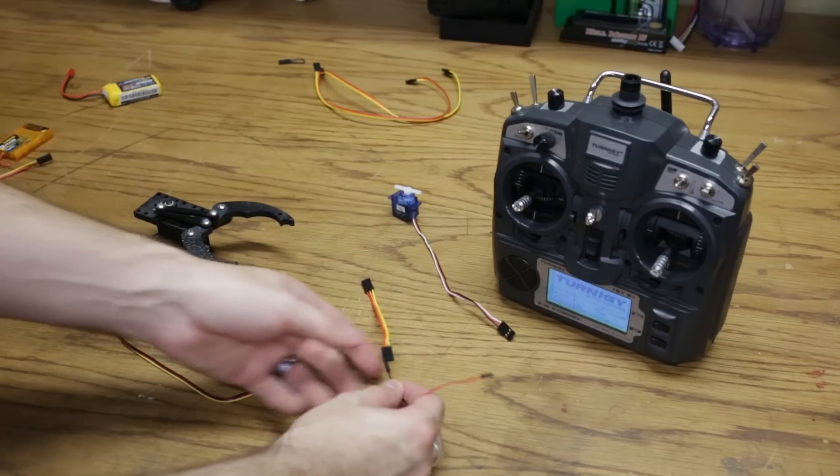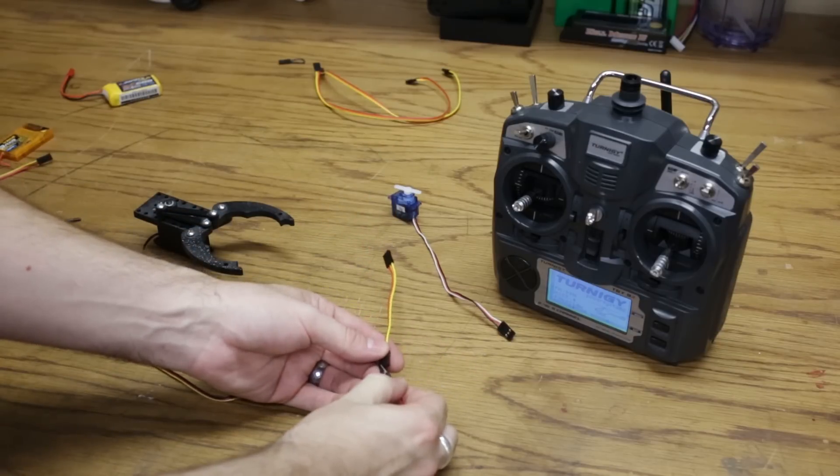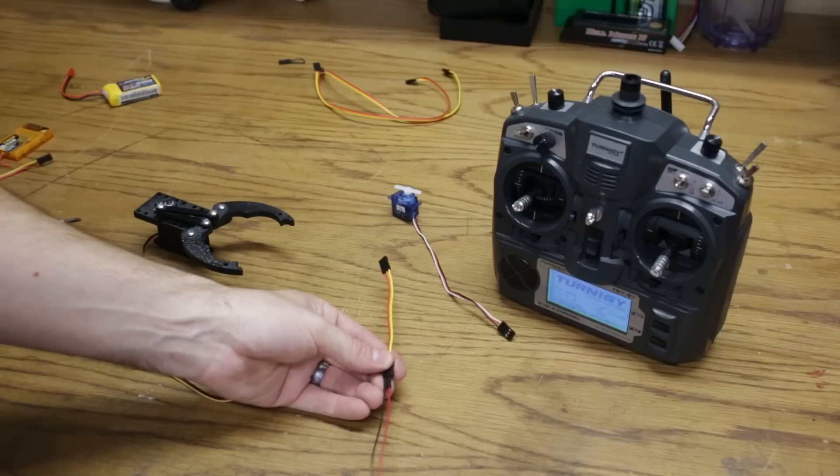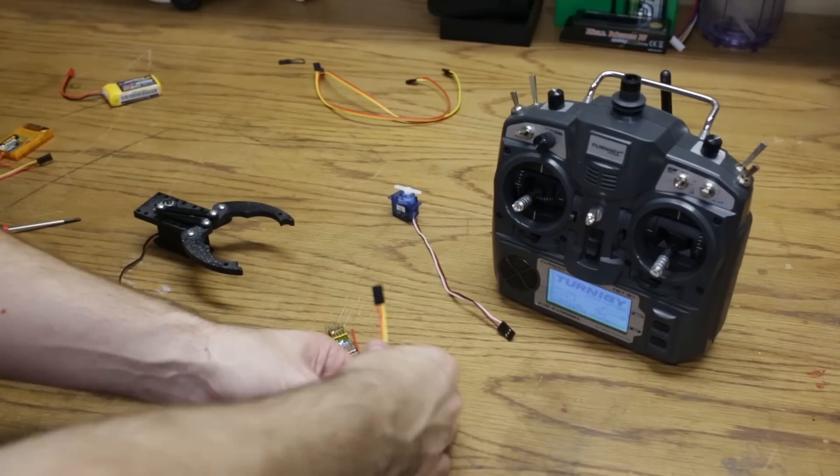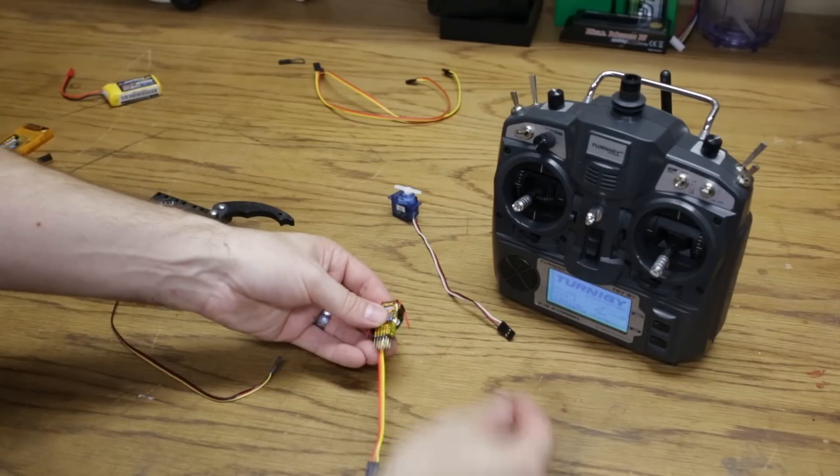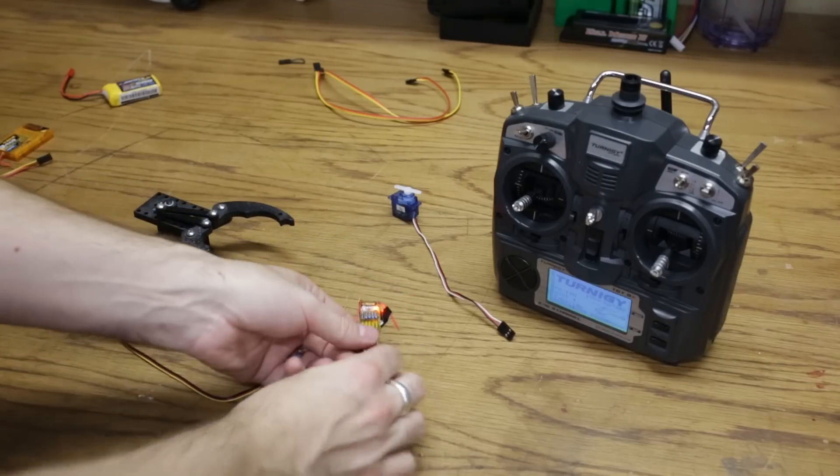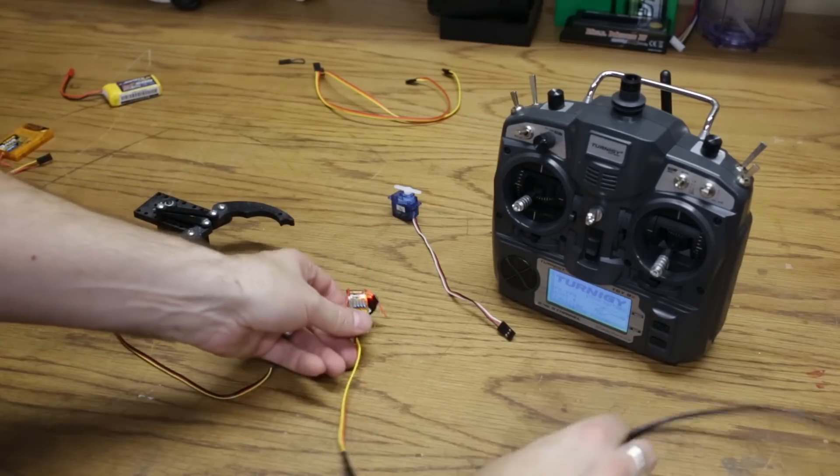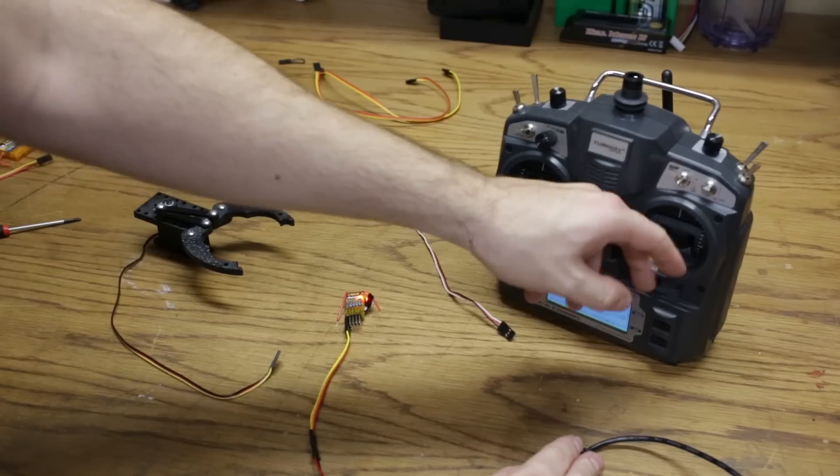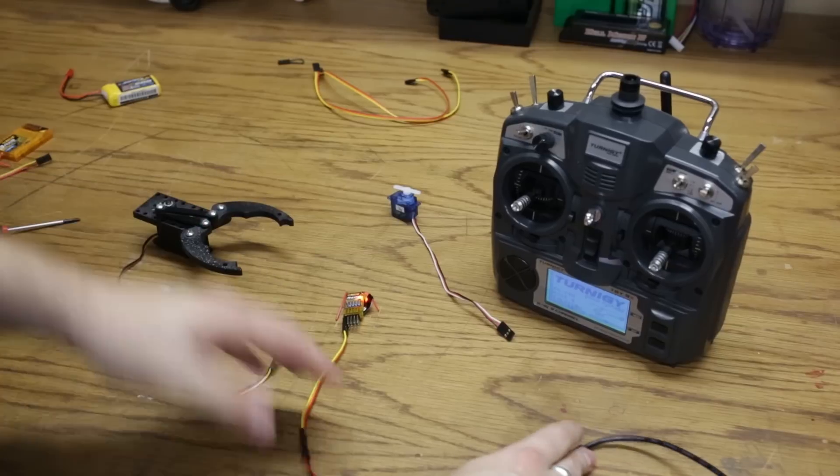And usually the ground goes on the bottom, the power goes in the middle, and the signal goes on the other side just like that. So if I plug this in with the red wire down, this will now give power to the receiver. You can see the lights on, and if I send a command with the radio, it will control something.